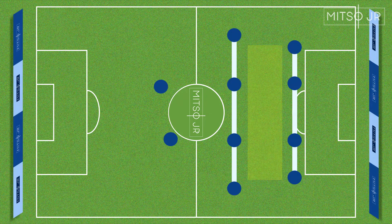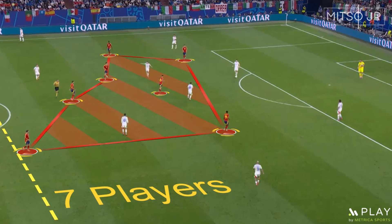Luis de la Fuente was actually able to solve all these problems, and that's how Spain outperformed Italy in this game. We will get back to that in a minute, but let's first see how Spain performed without the ball.